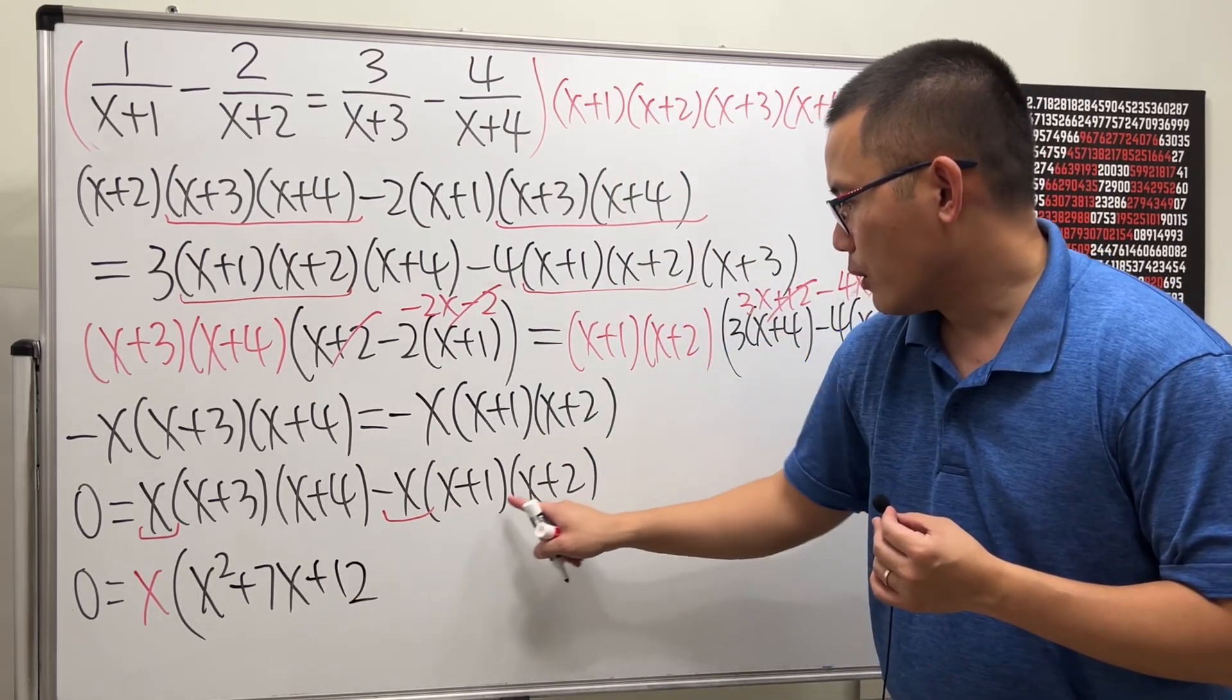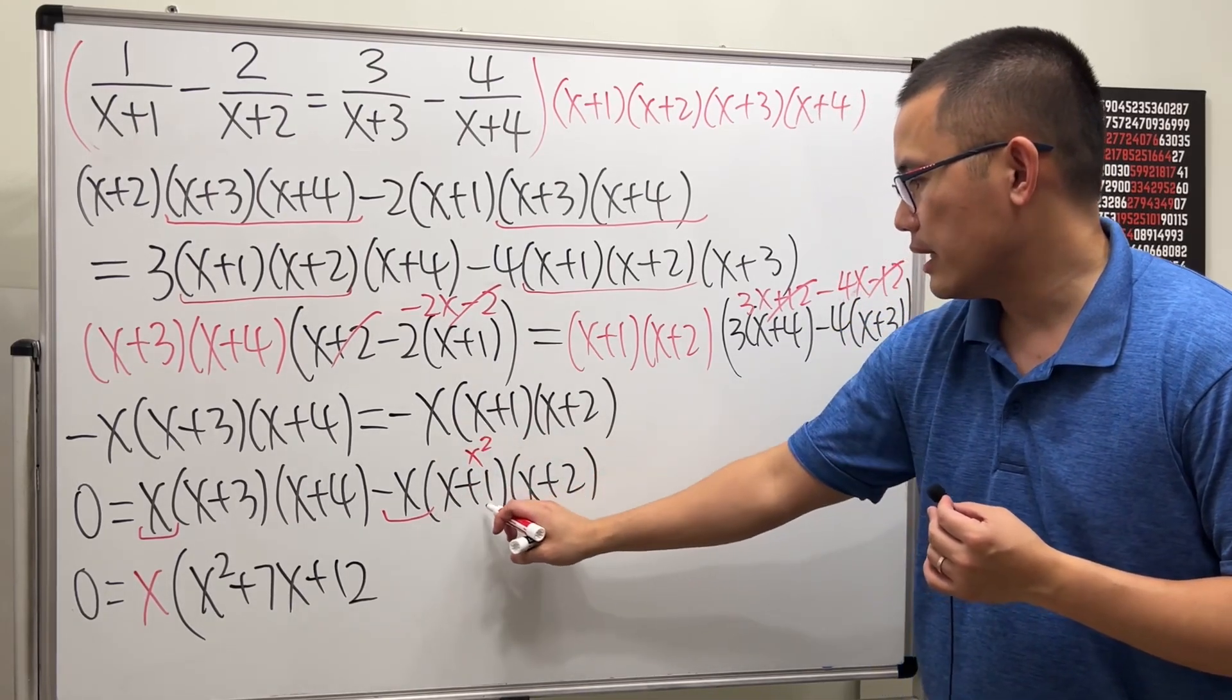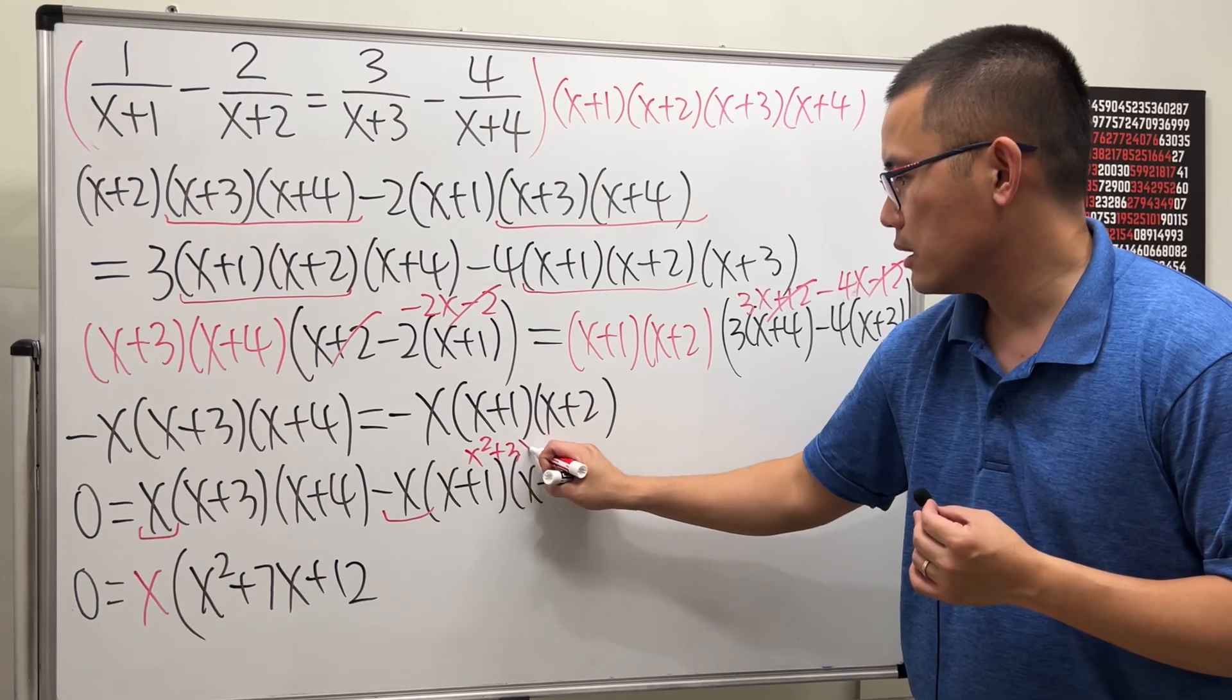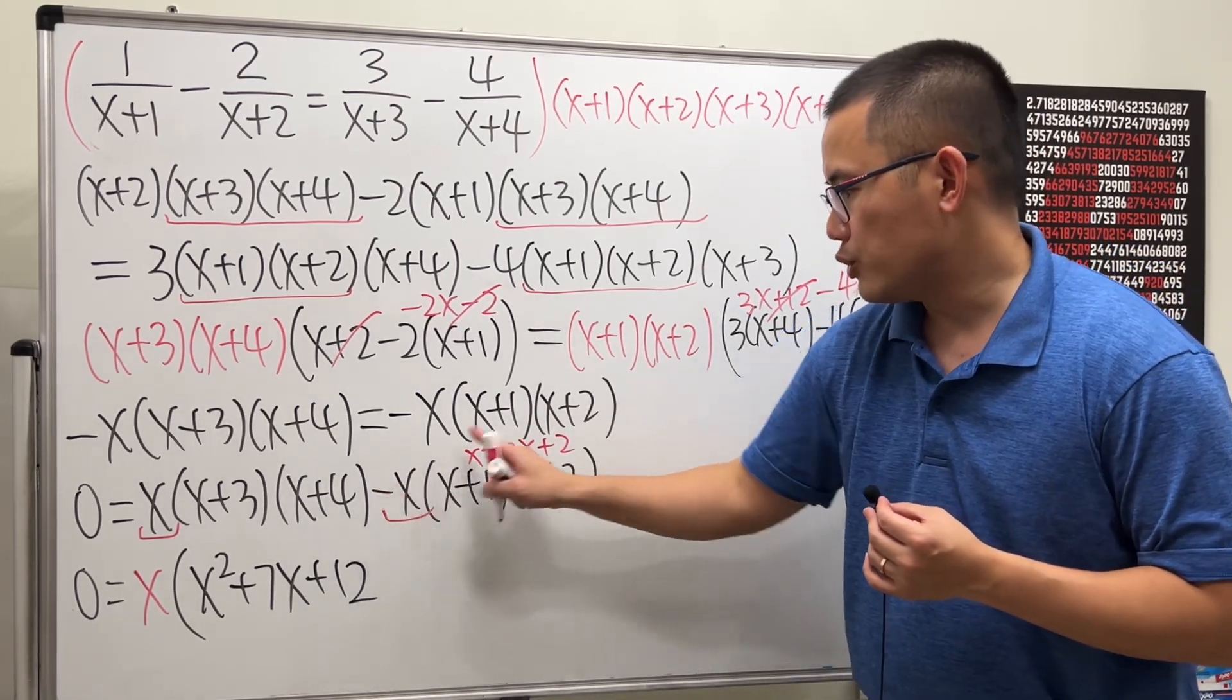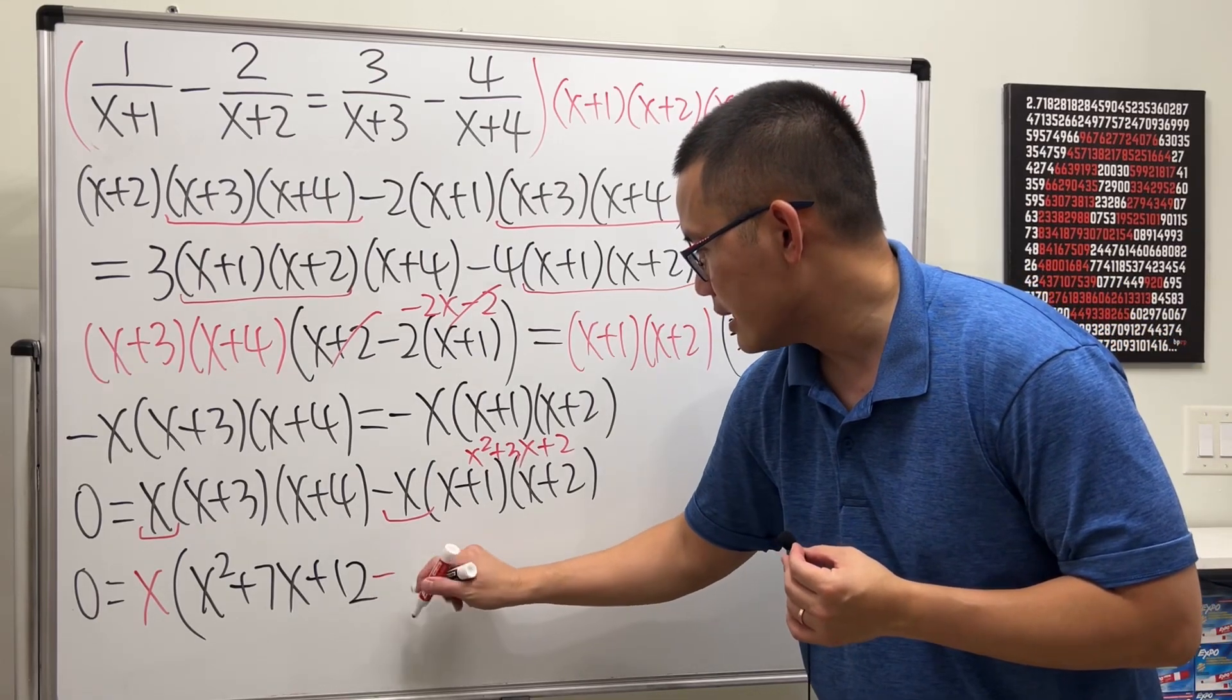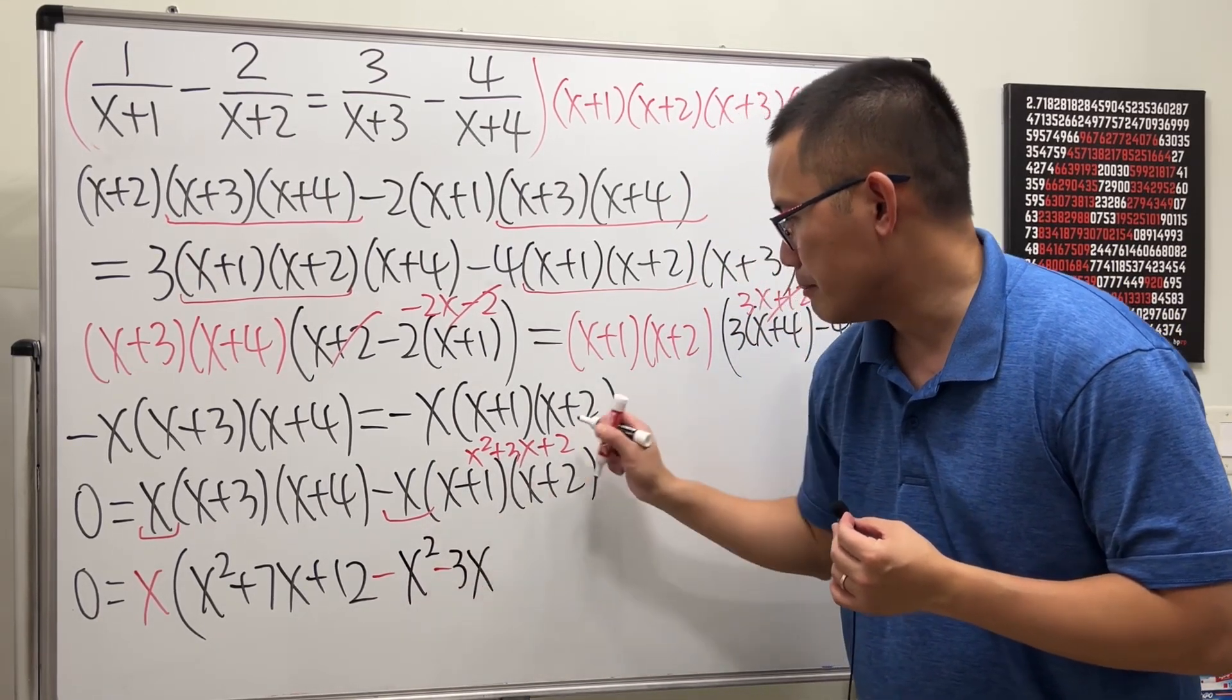Now, if we multiply this out, we will get x squared. x times 2 is 2x. And then one more x is 3x. And then 2. But here's the negative. Distributed negative, we get minus x squared minus 3x, and then minus 2.